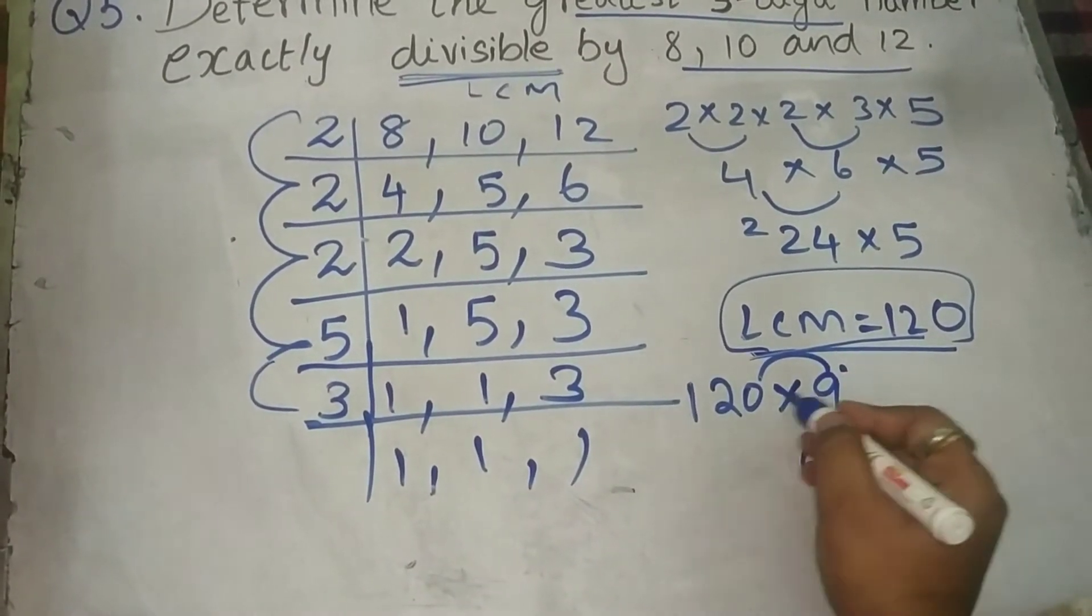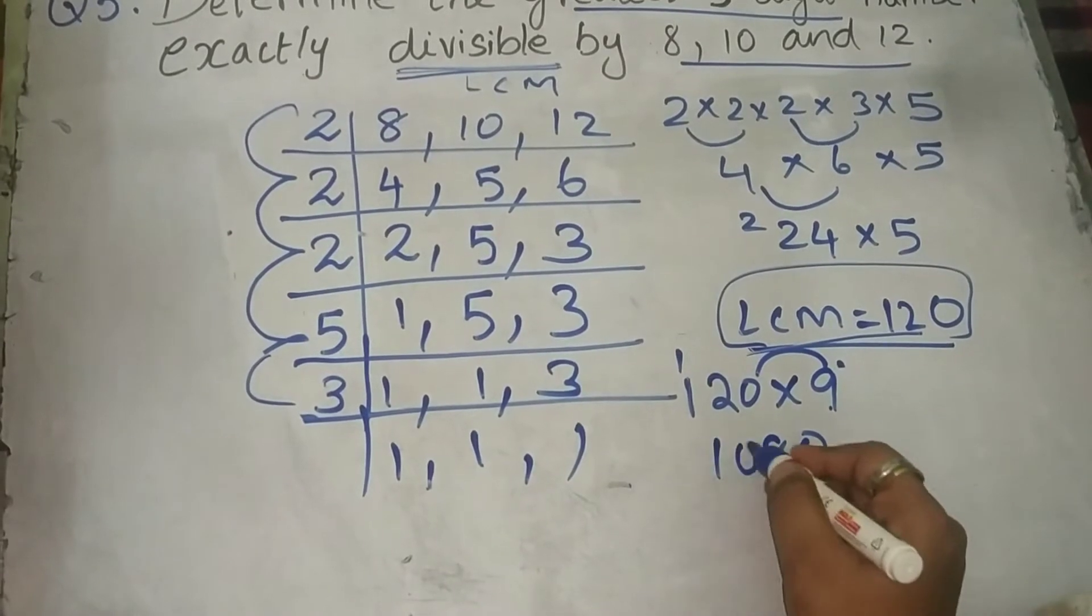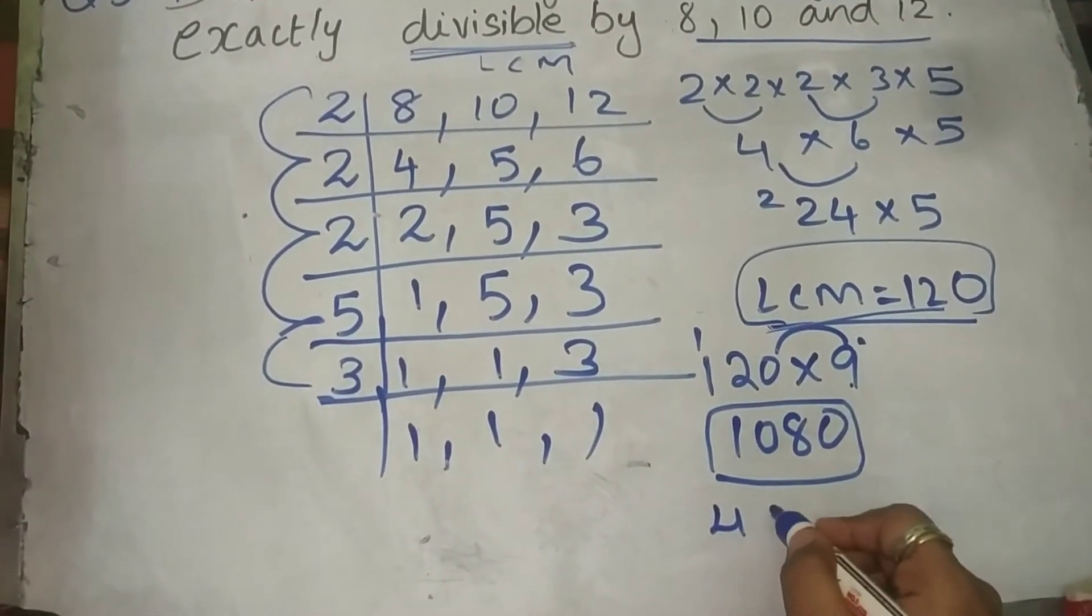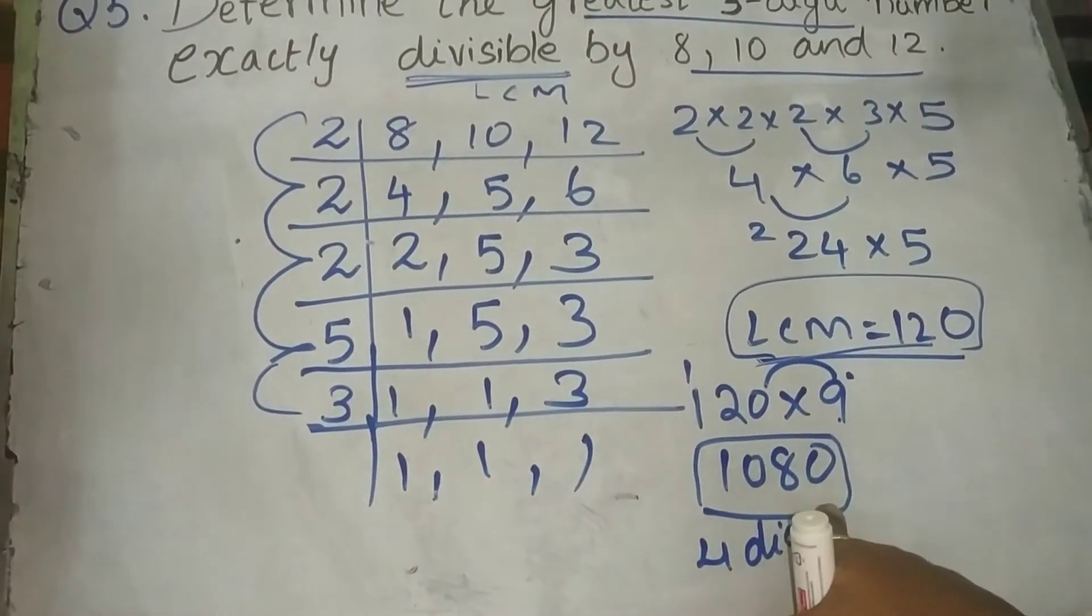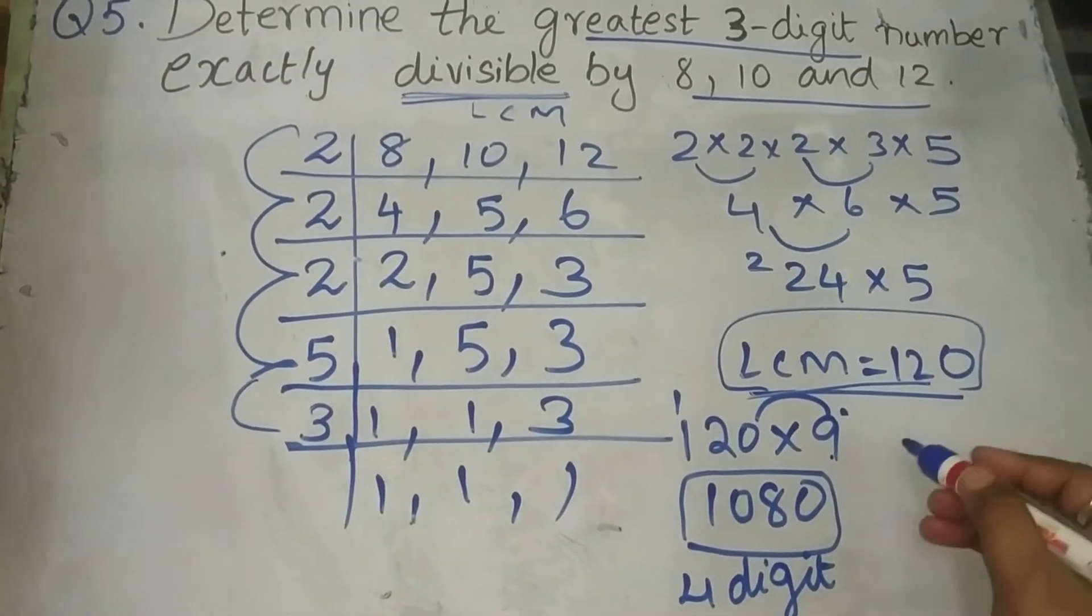So, 9 0's are 0, 9 2's are 18, 1 carry, 9 1's are 9, 10. So, what happens? 9 times I am getting 4 digit number. So, I can neglect this. I should not take this. So, move with the previous multiples. What is the previous multiples?